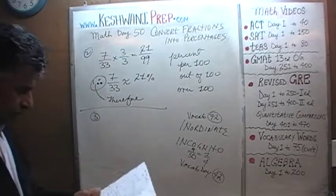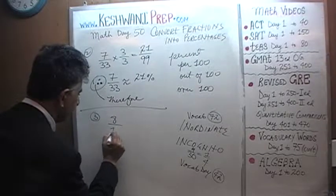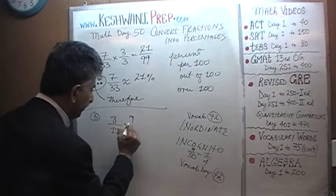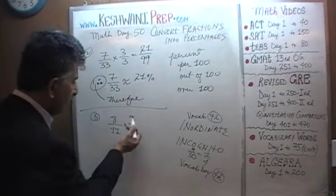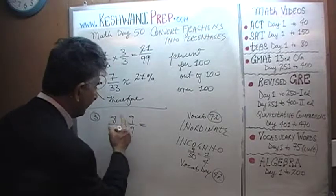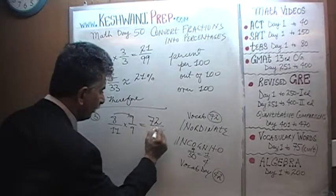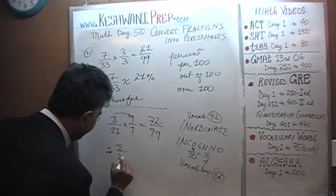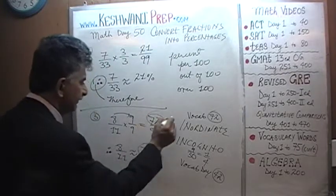Number 3: what percentage is 8 out of 11? It's the same thing — make the bottom as close to 100 as possible, as quickly as possible. By multiplying top and bottom by 9, we get 11 times 9 is 99. So 8 times 9, which is 72, over 99. Therefore, 8 over 11 is approximately 72 percent.